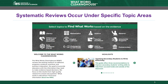The WWC conducts systematic reviews of research under a variety of topic areas. For example, the WWC reviews research in the areas of literacy, math, and science, as well as research on student populations, such as pre-K students, K-12 students, post-secondary students, English learners, and students with disabilities.